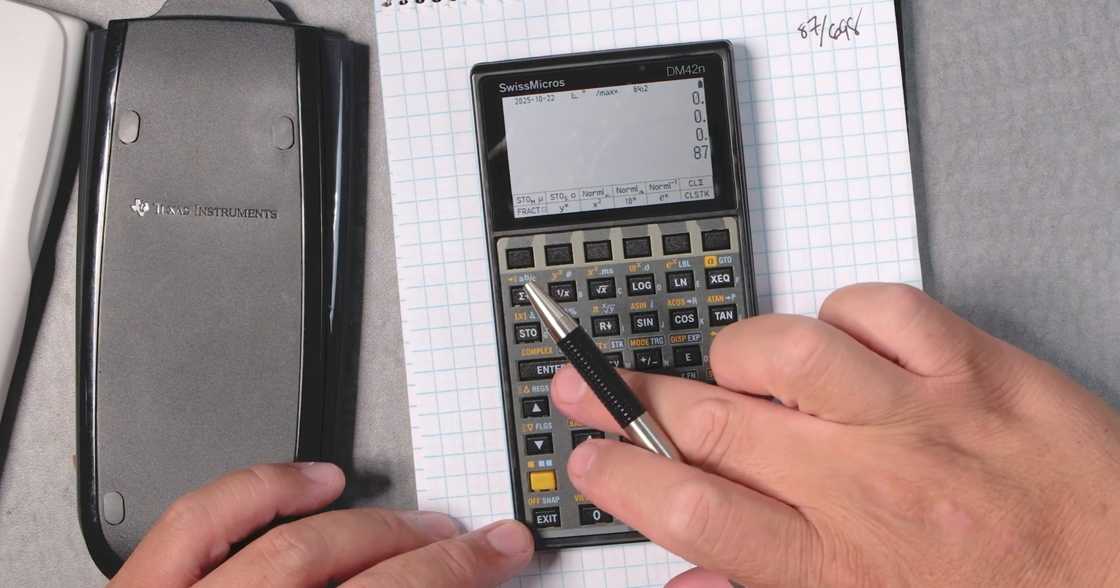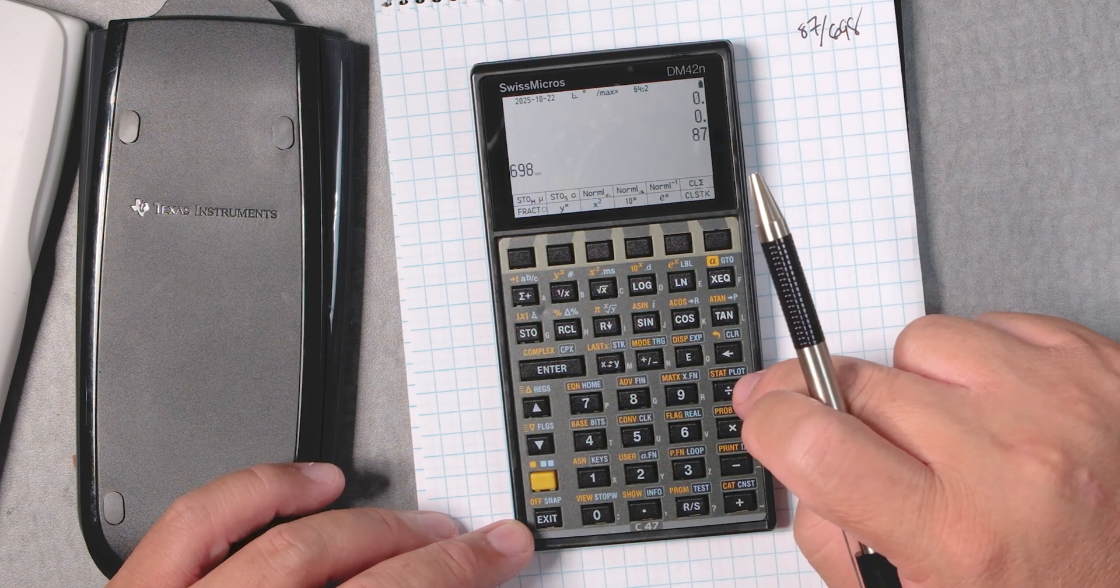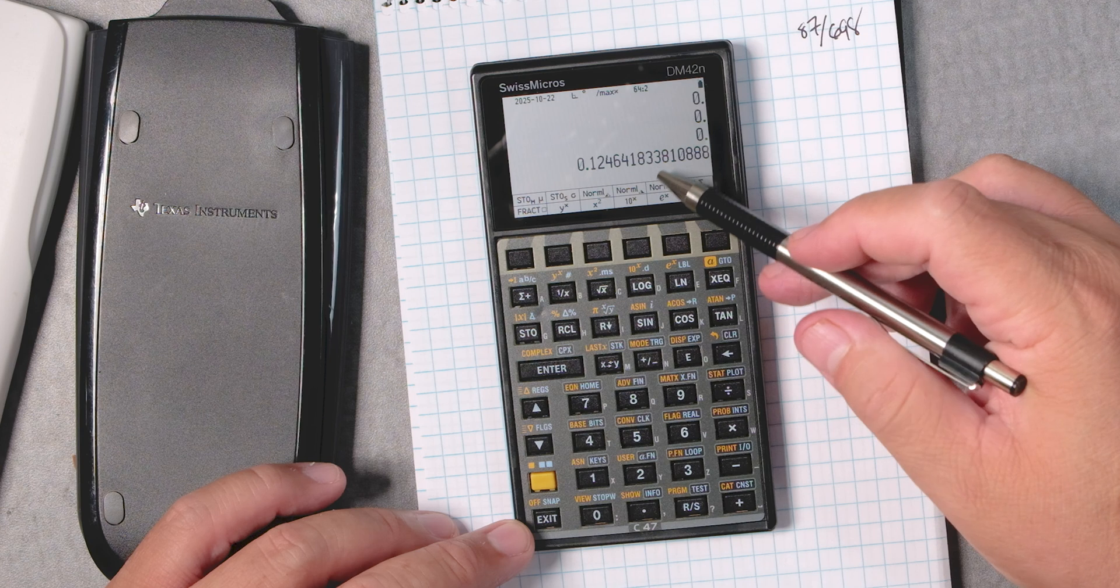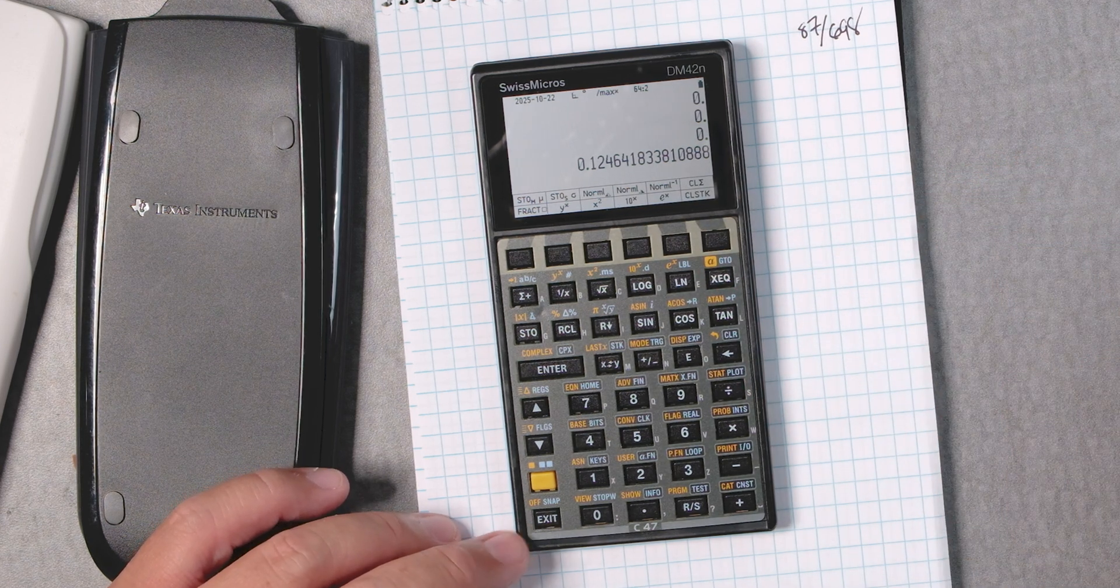87, I type 87, I entered, and then 698, and then I divide. Sure, it's going to give me a decimal answer. This decimal answer keeps on going forever.